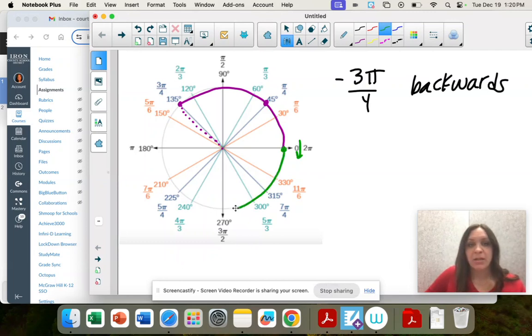I'm going to go my 90 degrees, see right here, and then continue to the pi over four. So right here.